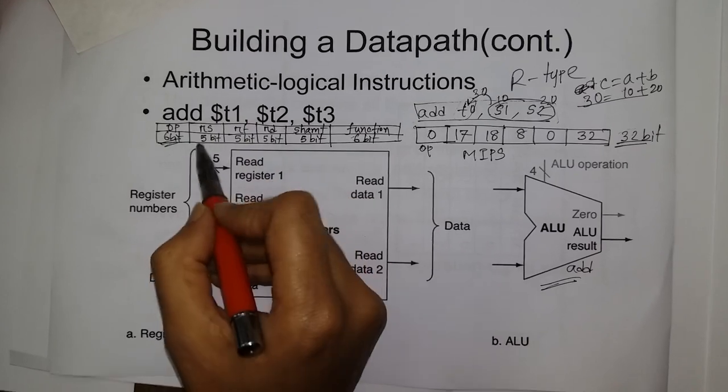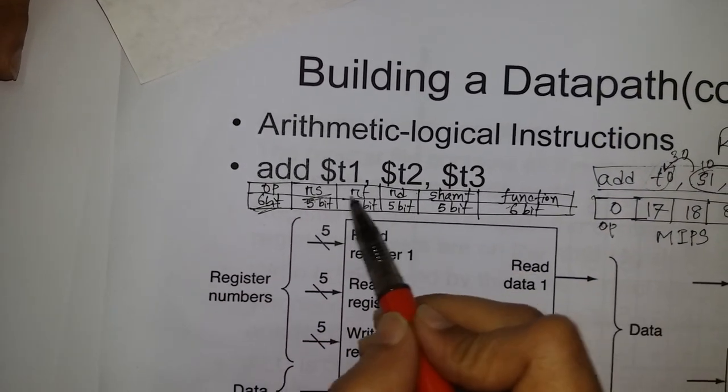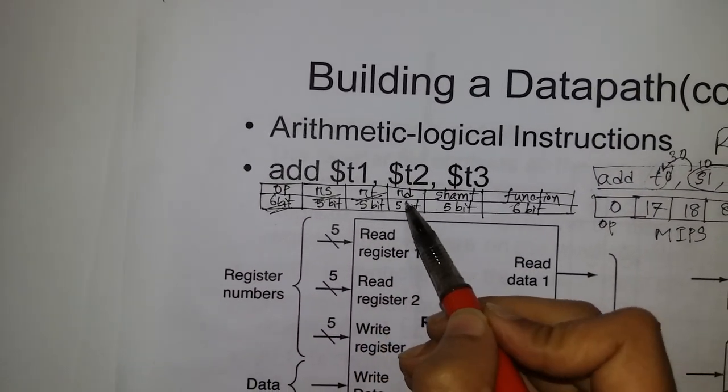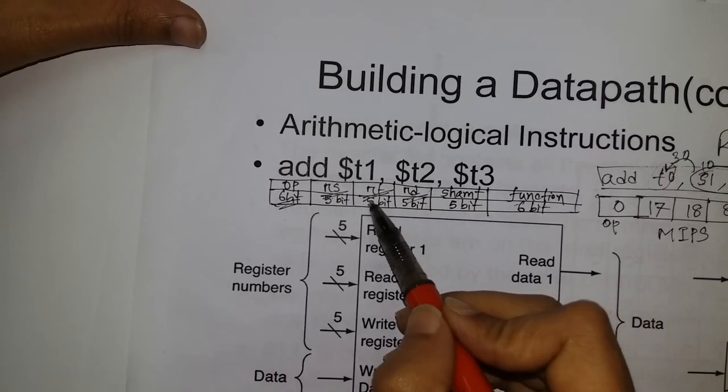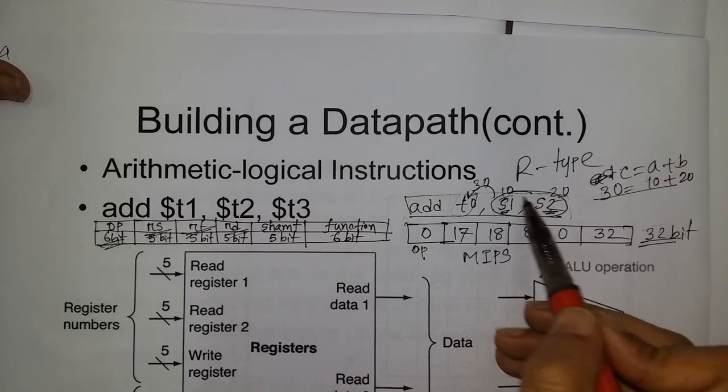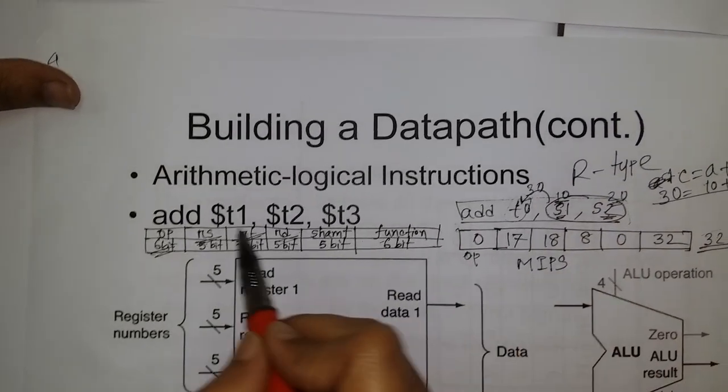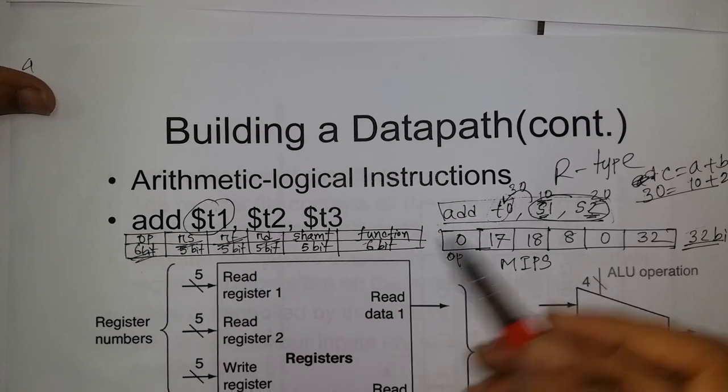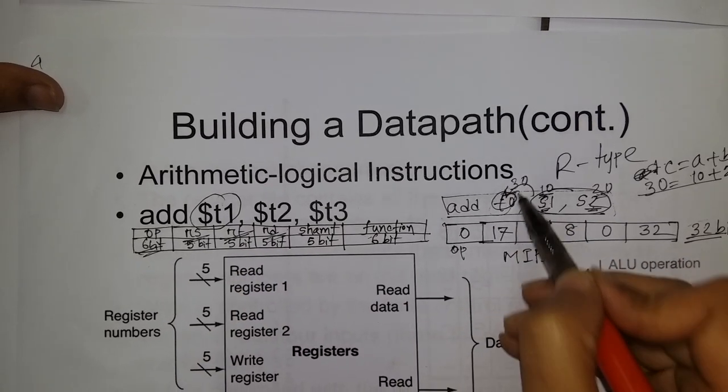In the MIPS instruction format, there is register source 1, register source 2, and register destination. The register sources are S1 with value 10 and S2 with value 20. The register destination T0 stores the result.